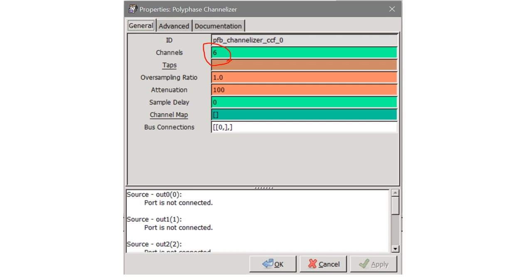And just to show you in the settings, all I did is change that number of channels to six. Everything else I kept as is, and it already computes the filters, the weights. I just have to basically tell it the number of channels, and the GNU Radio block does the rest.